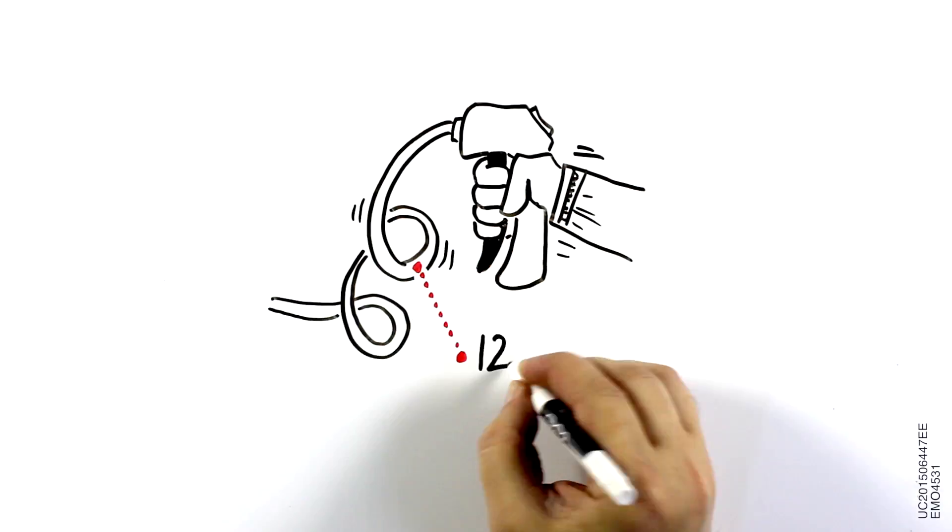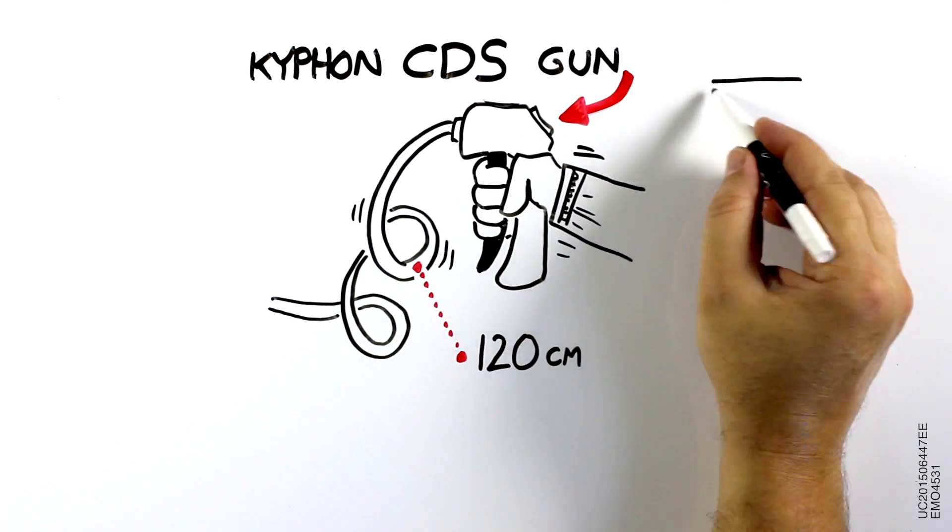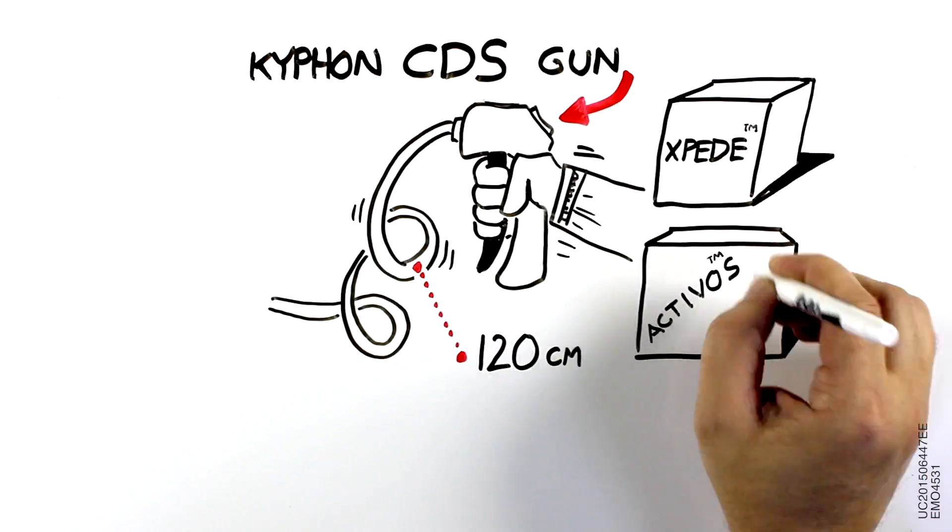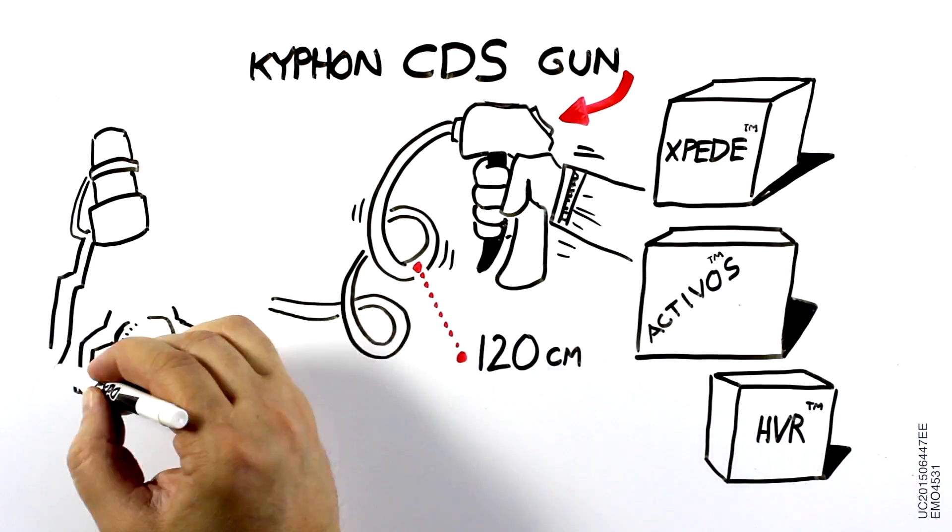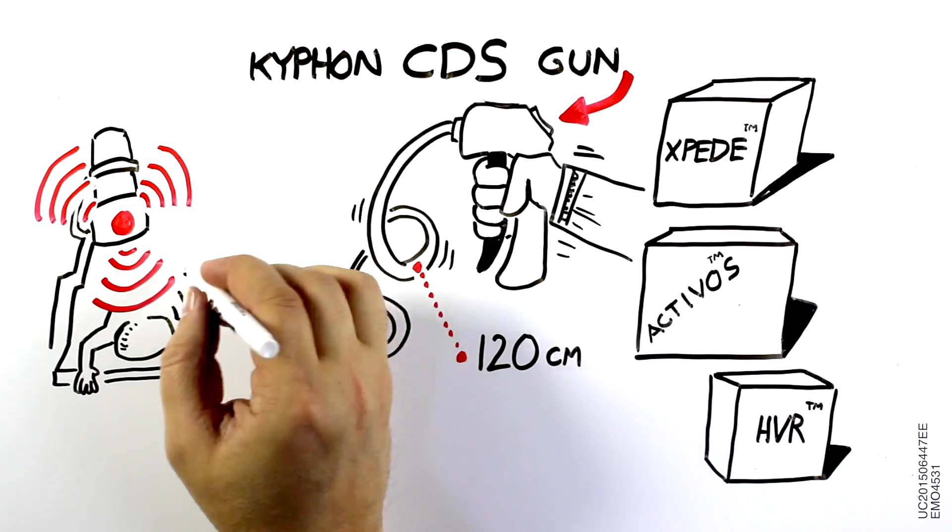With 120 centimeters of tubing, the kyphon CDS gun allows the physician to deliver their choice of three cements outside the field of radiation whilst maintaining tactile feel.